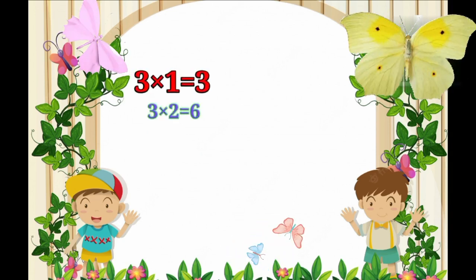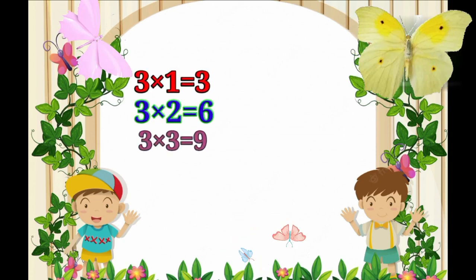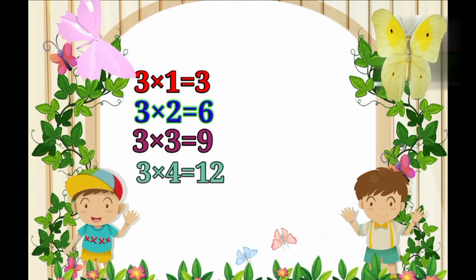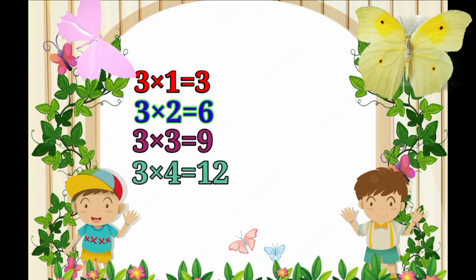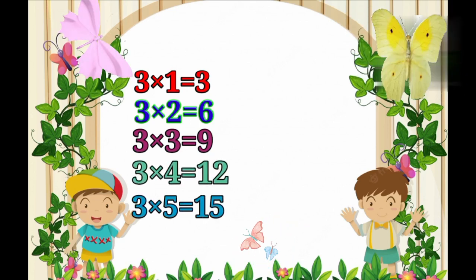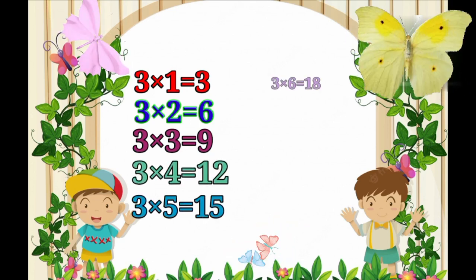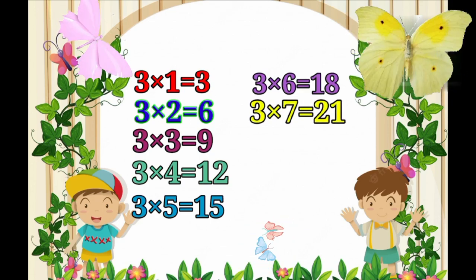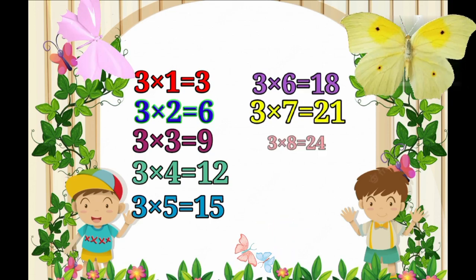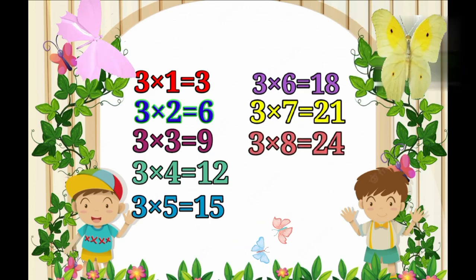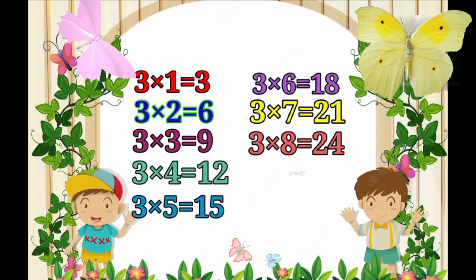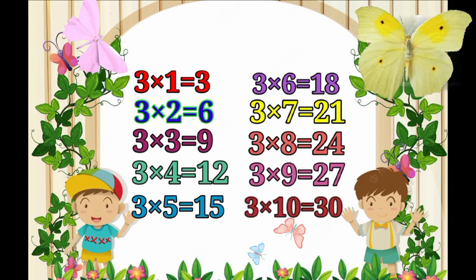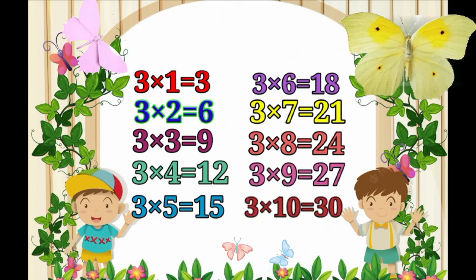Table of 3 recap: 3×1=3, 3×2=6, 3×3=9, 3×4=12, 3×5=15, 3×6=18, 3×7=21, 3×8=24, 3×9=27, 3×10=30.